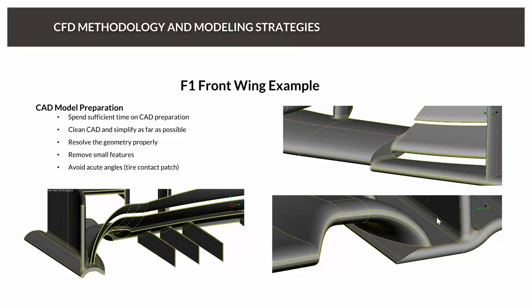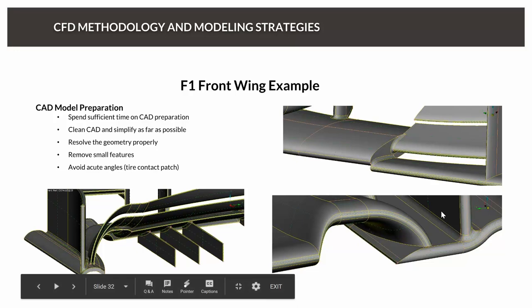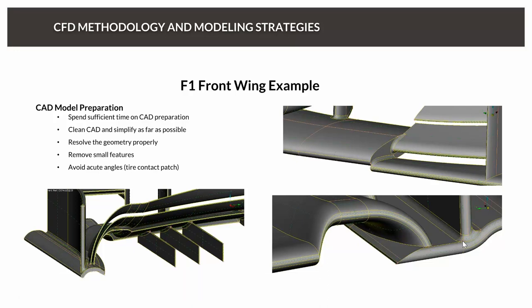Here's an example of a simplified F1 front wing. This is a very clean and nice CAD that has been worked on a lot — you wouldn't find any gaps in the CAD surfaces, no overlaps, and everything is resolved quite properly. Not much more to say about it, but this is a good starting CAD: nicely cleaned, not a lot of small tiny patches. If you can reduce the number of CAD surfaces, the number of patches, that is typically much better for your meshing software. If you can combine small patches into bigger ones while keeping quality, that would quite often help.